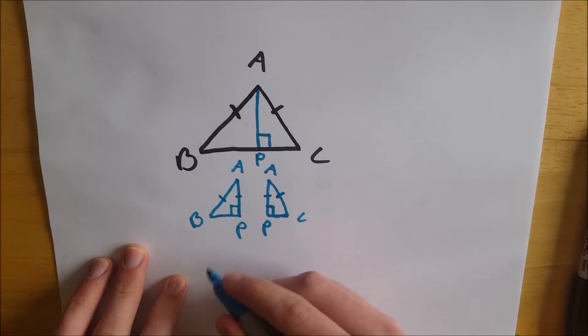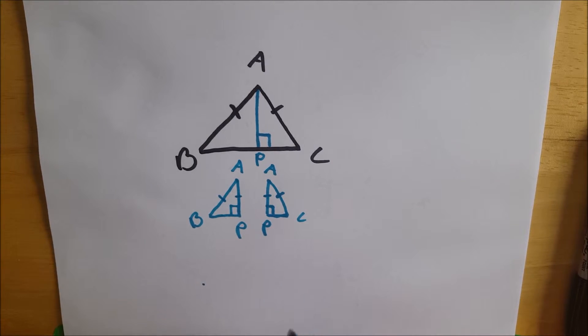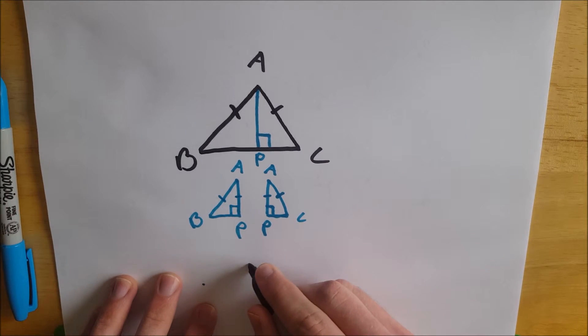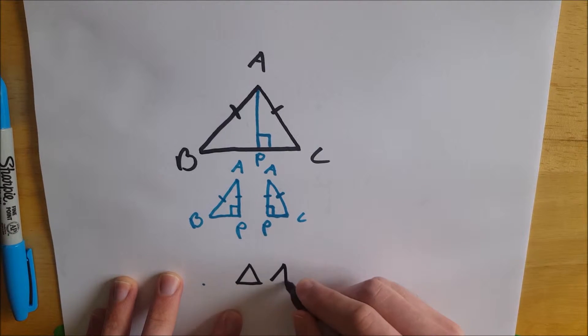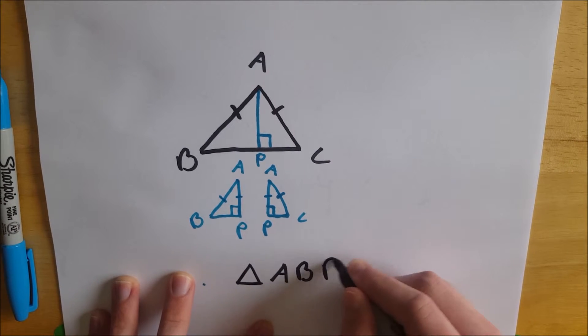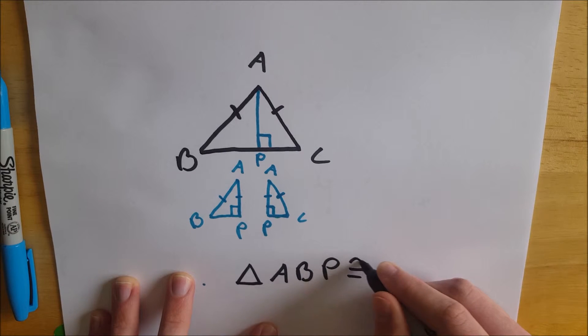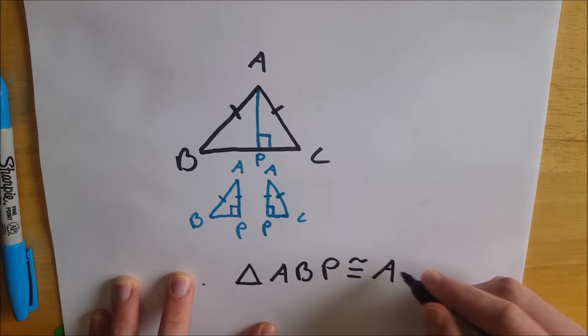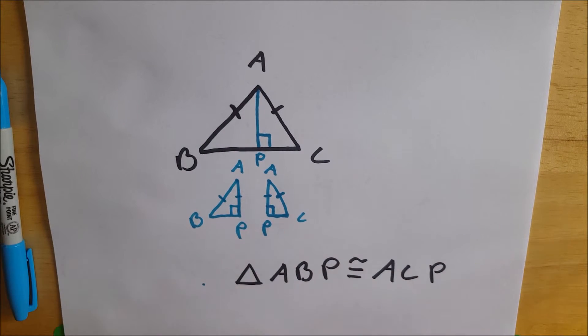So then we get that triangle ABP by hypotenuse leg is congruent to triangle ACP. So it's pretty simple.